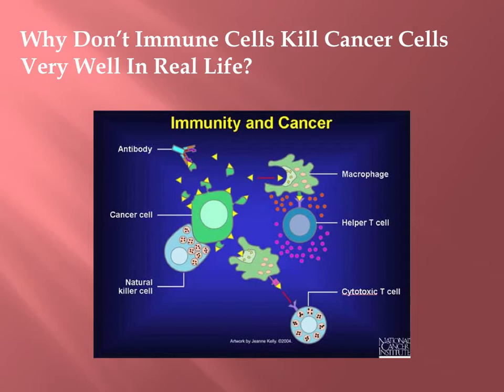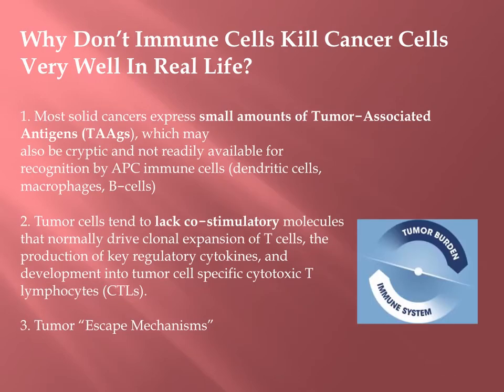Why don't immune cells kill cancer cells perfectly? In real life it doesn't happen perfectly, otherwise no one would be getting cancer. But in reality, even though someone gets a diagnosis of cancer, they had cancer maybe hundreds of times in their lifetime and the immune system killed off those cells. There are some technical factors on why cancer cells survive an immune attack.